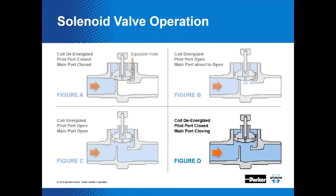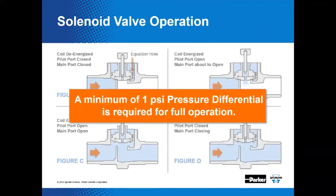Phase four: when we want to shut off the valve, we de-energize the solenoid coil. The plunger falls based on gravity or the kickoff spring. You're no longer venting pressure from above the seat, and as refrigerant continuously flows through the valve the pressure will drop, allowing the seat to fall closed. Importantly, you must have a minimum of one PSI pressure differential for full operation. Without that differential, the valve will not stay open. This is why it's so important not to oversize solenoid valves — when they're oversized, you don't have a pressure drop, and these normally closed valves will stay open.